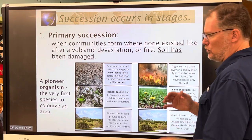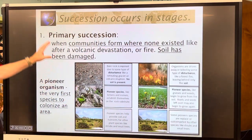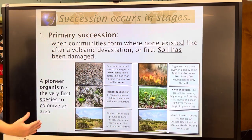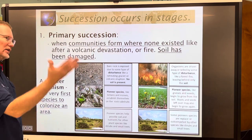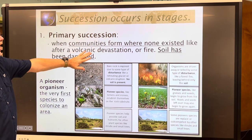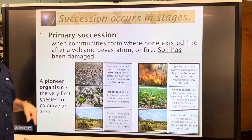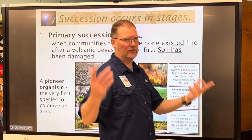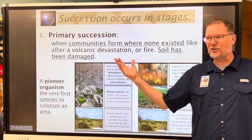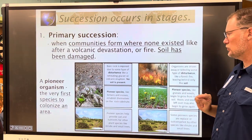So how does succession occur? Primary succession is when a community develops where none existed before — like after volcanic devastation or fire where the soil has been destroyed. For example, a new island emerging from the ocean after a volcano gives you barren land, and primary succession describes how life first starts there.